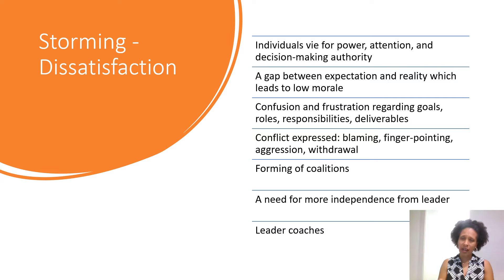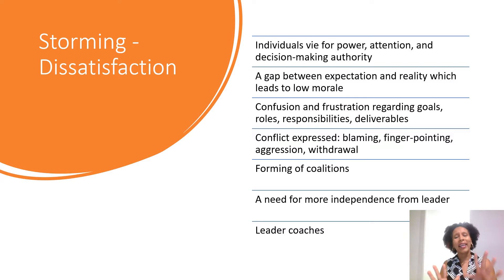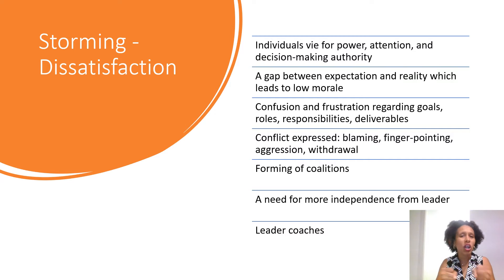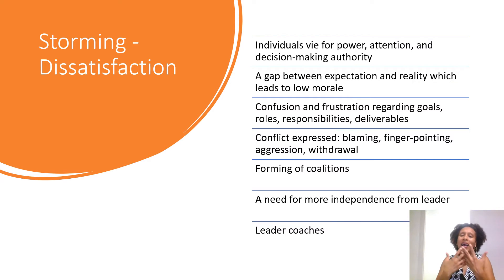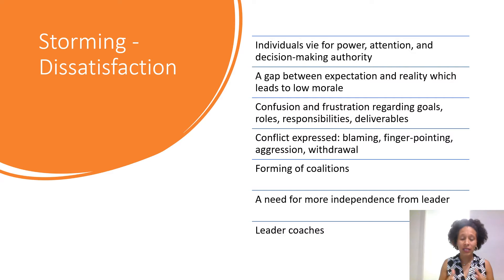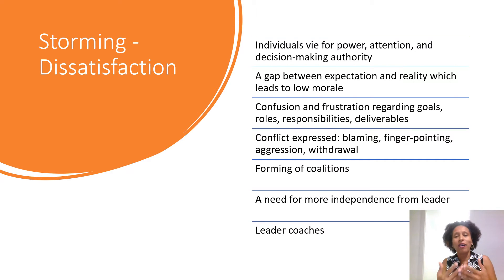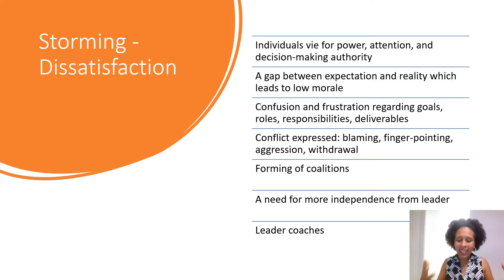You also have confusion and frustration as persons jostle for power positions and authority. There's blaming and finger pointing — some persons are aggressive in how they deal with conflict, while others on the team are withdrawing because that's just not who they are. As you have aggressors and those withdrawing and persons trying to make their mark, little coalitions form — pockets of people siding with each other. In this role, the leader needs to coach and guide persons through the process, rather than being as directive as they were during the forming stage.